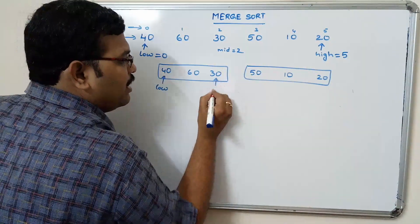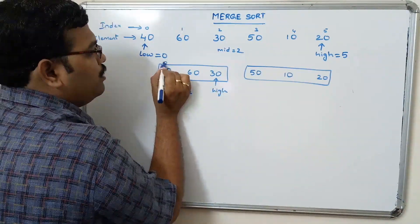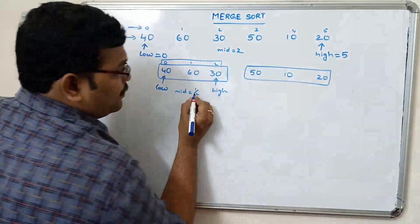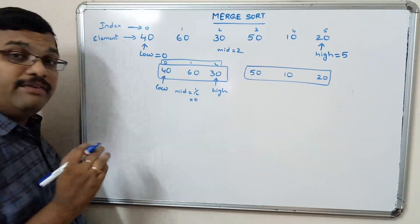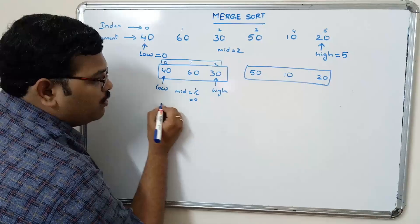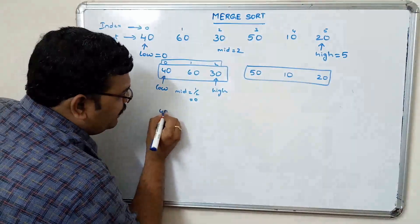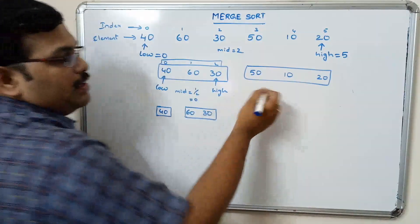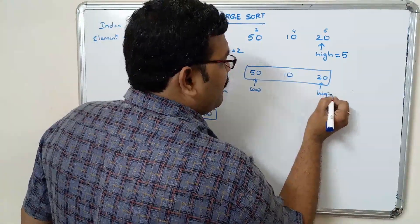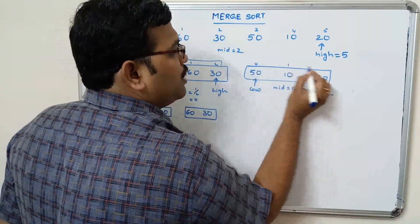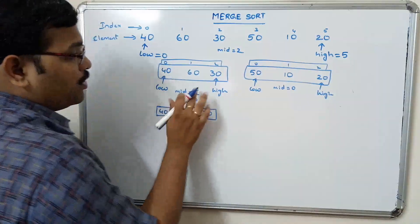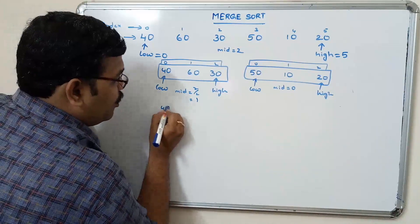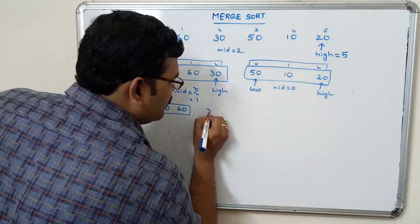Now consider the first part again. Low is 0, high is 2. Calculate mid: zero plus two divided by two gives one using floor division. Again divide into low to mid and mid plus one to high, giving 40, 60 in one part and 30 in another. Similarly for the second part: 50, 20 — split into 50 and 10 in one part, 20 in another.